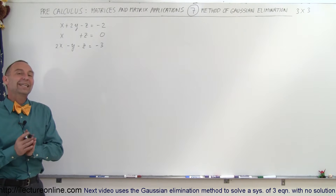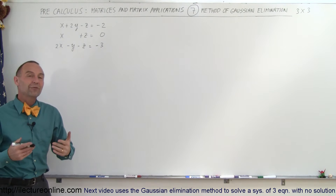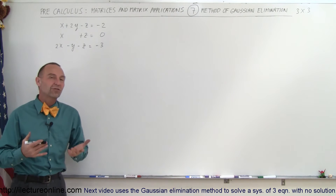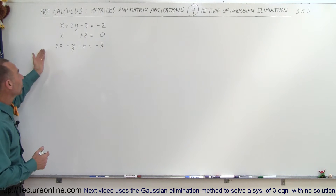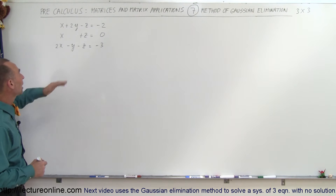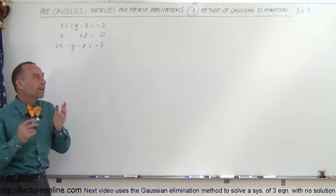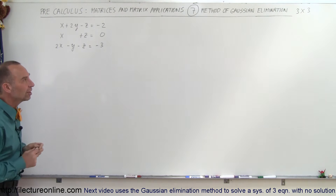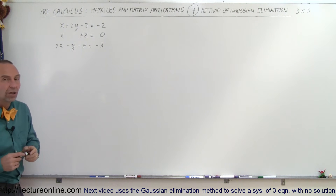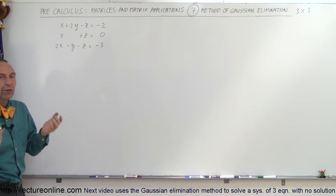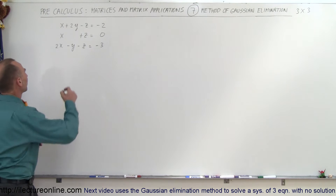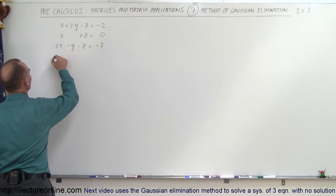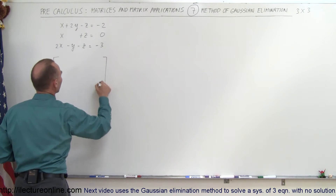Welcome to ElectronLine. Here we're going to solve a three equation, three unknown type of problem, also known as a system of linear equations where you have three variables and three unknowns. We're going to use the method of Gaussian elimination by using a 3 by 3 augmented matrix to solve this problem. So we're going to turn this into an augmented matrix.